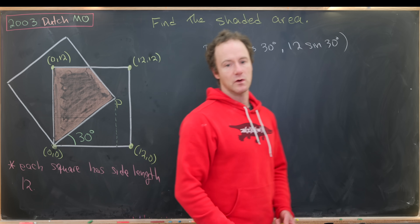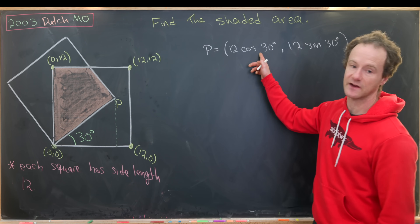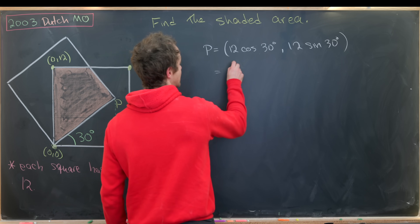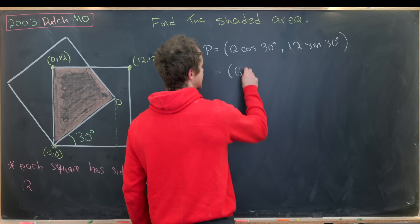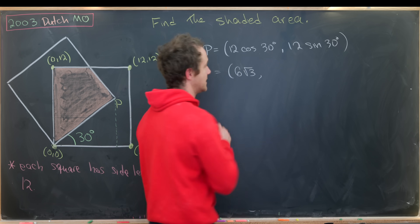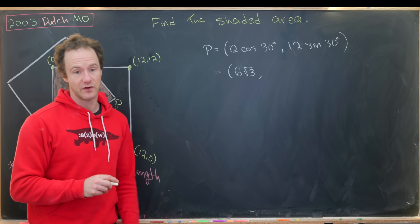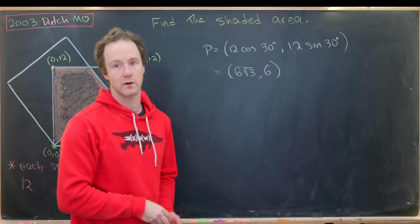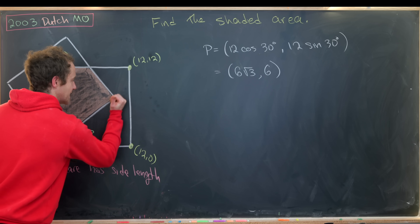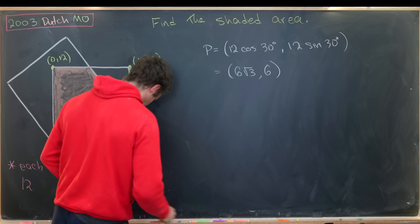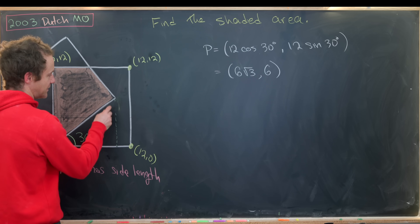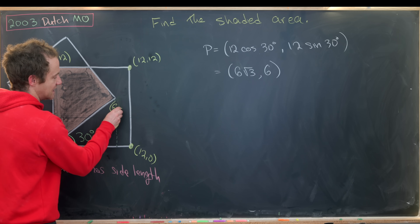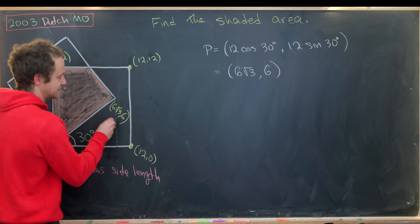Using the fact that cosine of 30 degrees is √3/2, we rewrite the x-coordinate as 6√3. And then sine of 30 degrees is 1/2, so that gives us 6 for the y-coordinate. So we can now write down the coordinate for P: it is (6√3, 6).